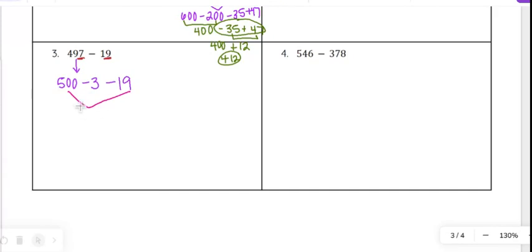So 500 minus 19, again, I'm probably thinking, okay, 500 minus 20 is going to put me at 480, but I didn't quite subtract 20, so I'm at 481. And then I subtract 3 this time.